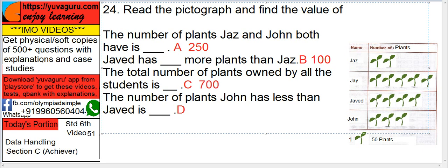Number of plants John has less than Javed is, only one plant, means 50 plants less.